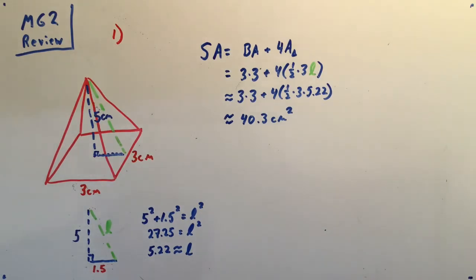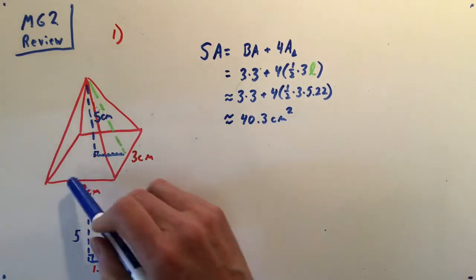Find the surface area of a square base pyramid with height 5 and side length of the base 3 centimeters. So that's what I've drawn here.